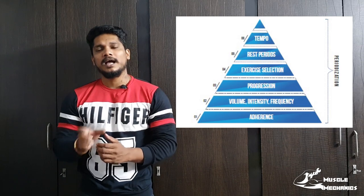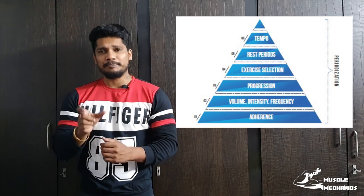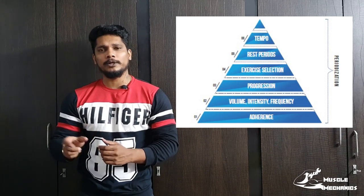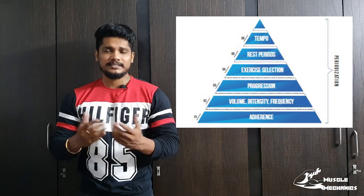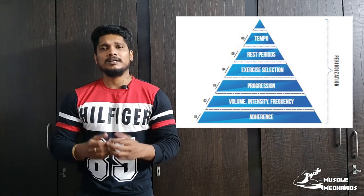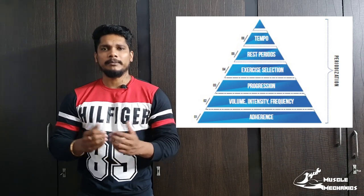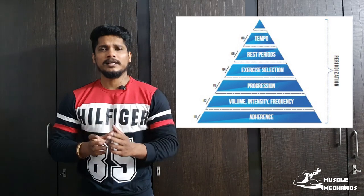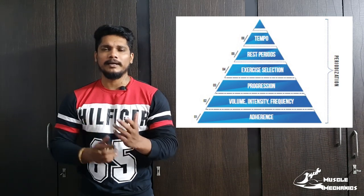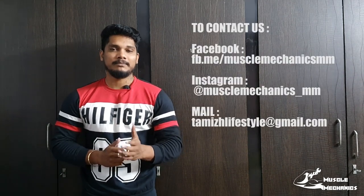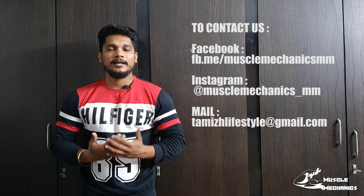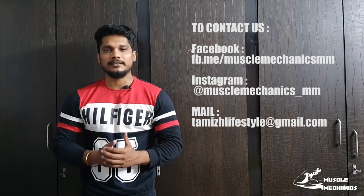So to summarize, the six parameters of the workout pyramid are: Consistency, Intensity, Frequency, Volume, Progressive Overload, Exercise Selection, Rest Intervals, and Rep Tempo. If you follow these parameters, you can design a complete workout program. If you found this video helpful, please like, comment, share, and subscribe to our channel, and click the bell icon for more videos.